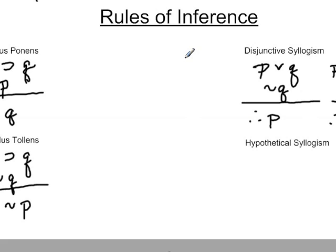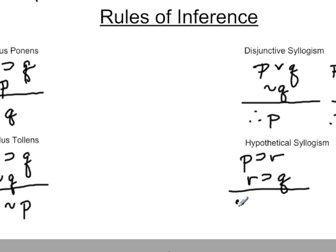From the last section, we had the hypothetical syllogism: if P then R, and if R then Q, then if P then Q. That necessarily leads to the fact that if we have P, we would get Q. That was the eight-row chart we had before, proving that if P then Q necessarily had truthful statements of P then R, R then Q. So that's our hypothetical syllogism.